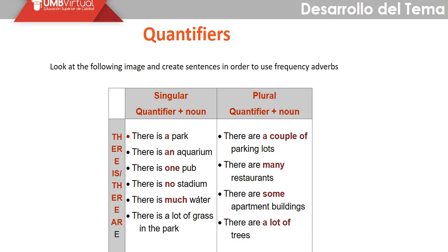For singular nouns like park, aquarium, pub, and stadium, in a positive sentence we use 'a' or 'an' identifying whether the word begins with a consonant or vowel sound. 'One' is another way to emphasize the number of places. In negative form we use 'no.' For plural nouns: 'a couple of,' 'many,' 'some,' and 'a lot of.' 'Some' and 'a lot of' can be used for both countable and uncountable nouns. 'Many' is only for countable nouns. 'A couple of' implies two things, so it is always plural.